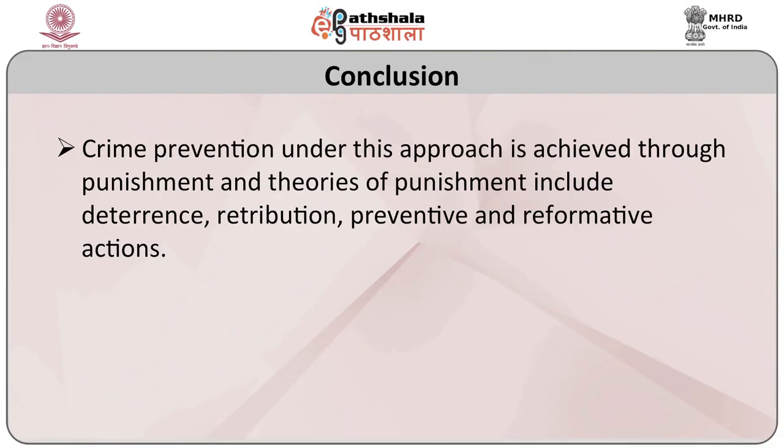Each theory touches upon the interrelation between the external environment and the causes and occurrence of crime. The social approach focuses on the underlying social and economic causes of crime in the community and on limiting the supply of motivated offenders, including developmental prevention and community developmental models. Under this approach, social control theory proposes that people's relationships, commitments, values, norms, and beliefs encourage them not to break the law. The criminal justice approach refers to programs delivered by police, courts, and corrections that aim to prevent recidivism among those who have already been engaged in offending behaviour. Crime prevention under this approach is achieved through punishment, and theories of punishment include deterrence, retribution, preventive, and reformative actions.